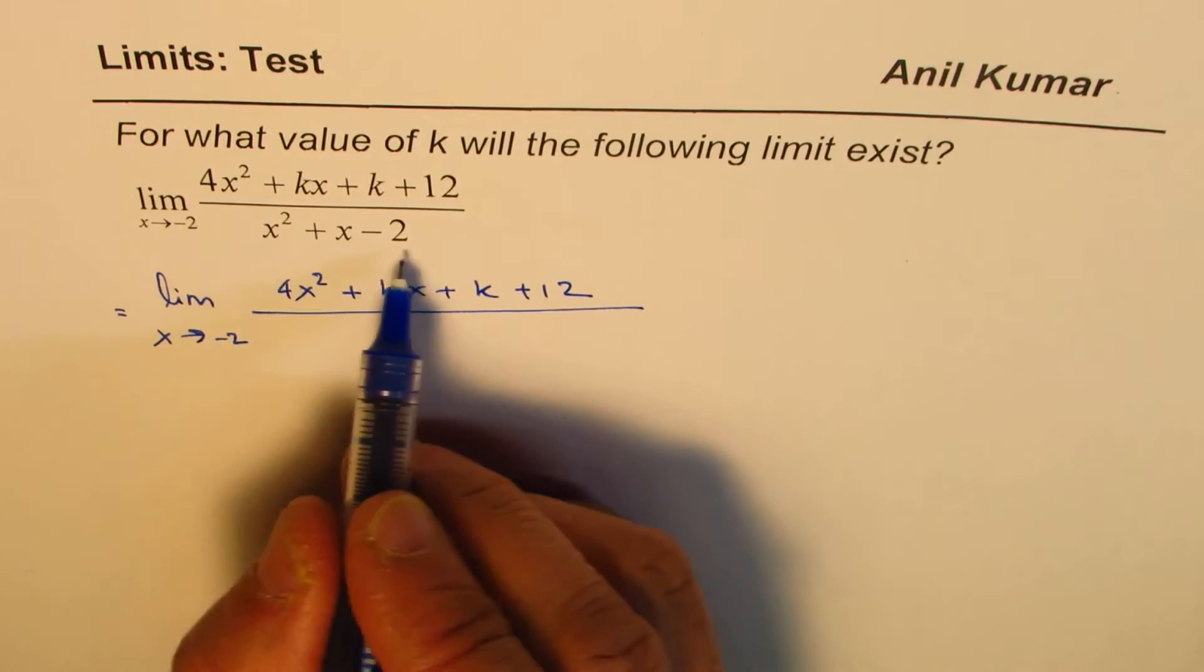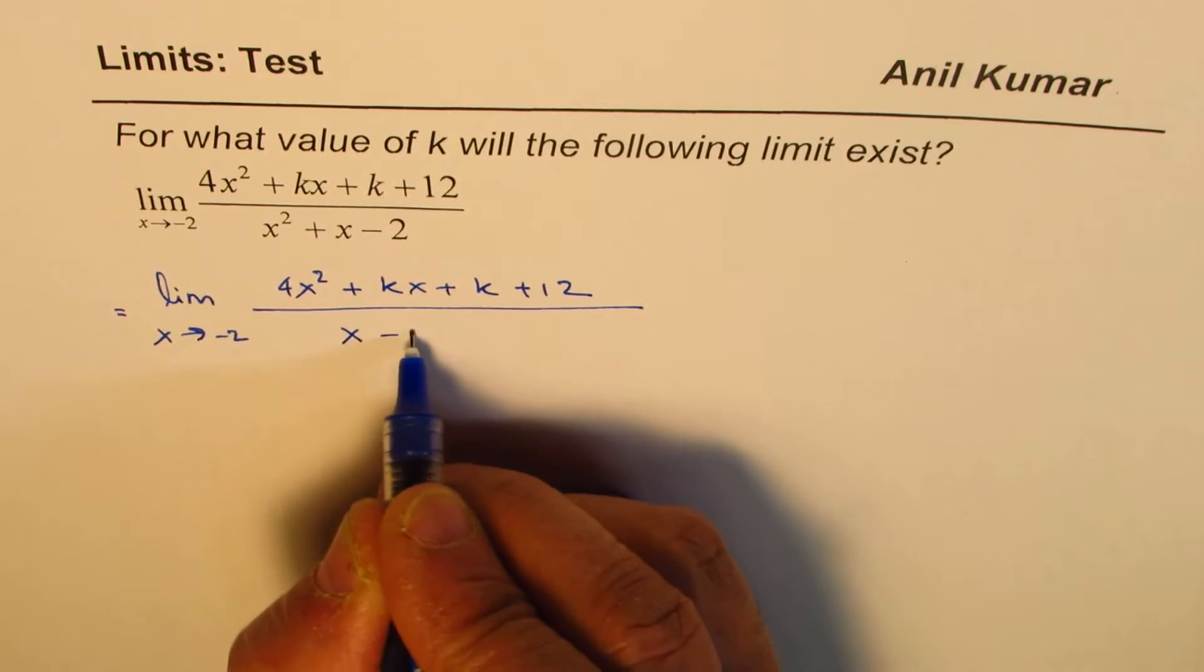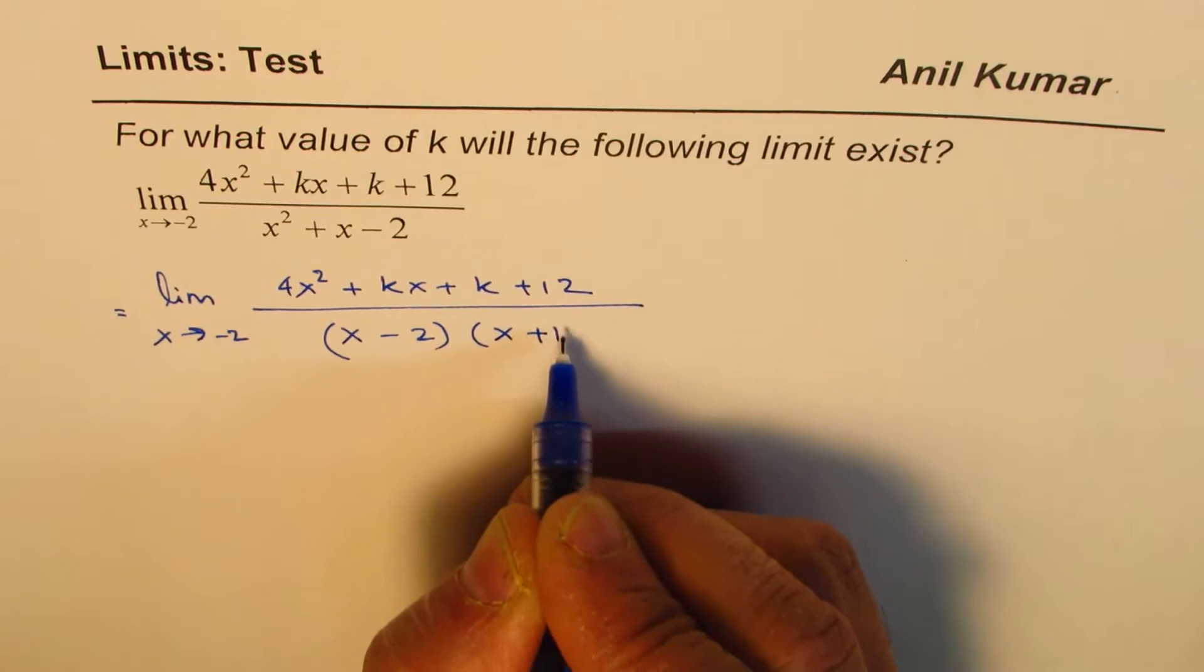And the denominator can be factored. Product is minus 2, sum is 1, you could write this as x minus 2 times x plus 1.